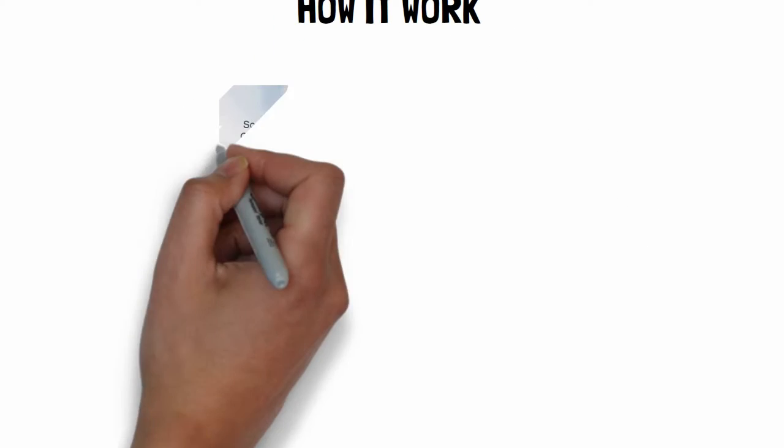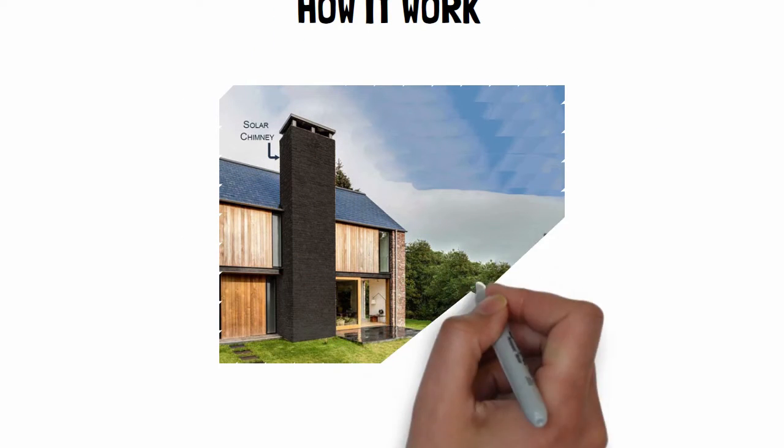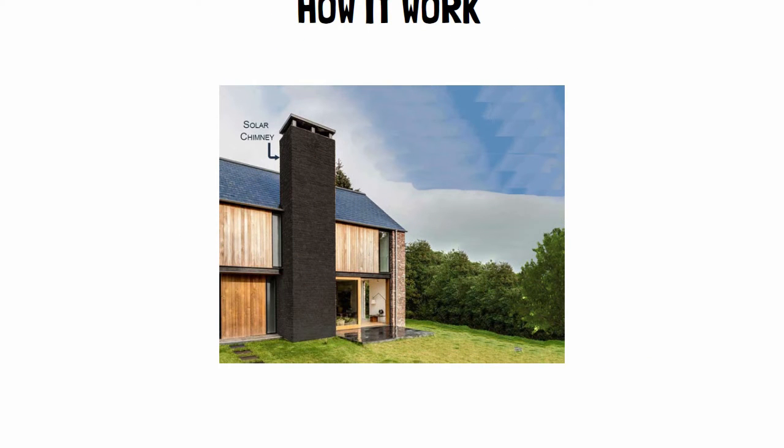The solar chimney also works on the same principle. First the chimney is coated with black material to absorb maximum sunlight.